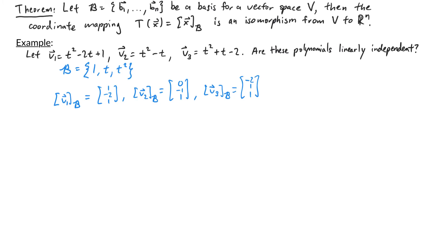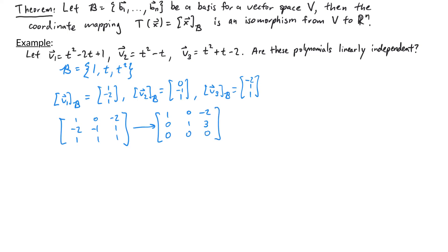The matrix with those coordinate vectors as columns is [[1, 0, −2], [−2, −1, 1], [1, 1, 1]]. After row reduction, the result is [[1, 0, −2], [0, 1, 3], [0, 0, 0]]. Since the last column is not a pivot column, these vectors are linearly dependent — and that also tells us that the polynomials themselves are linearly dependent.